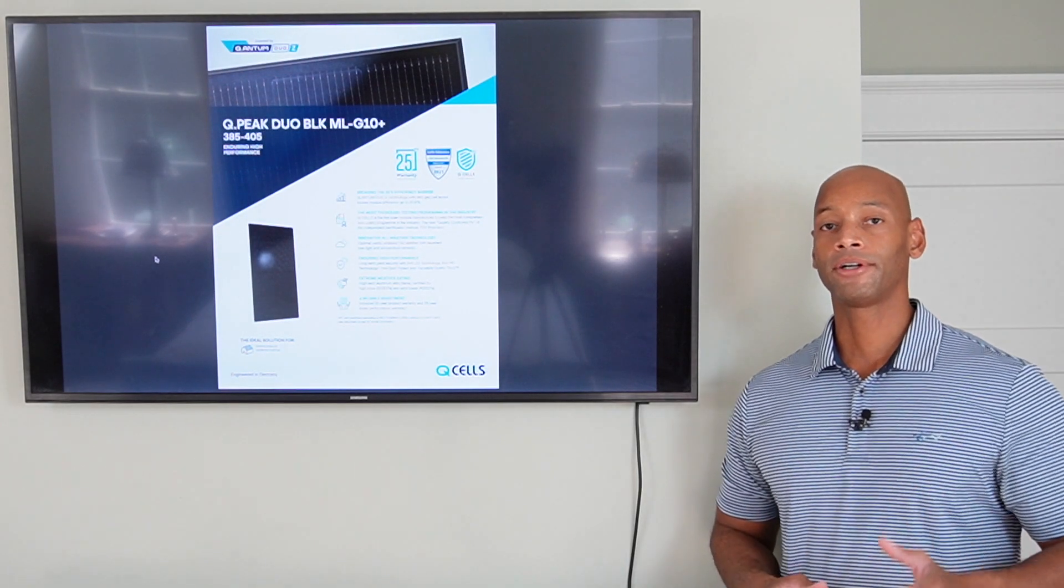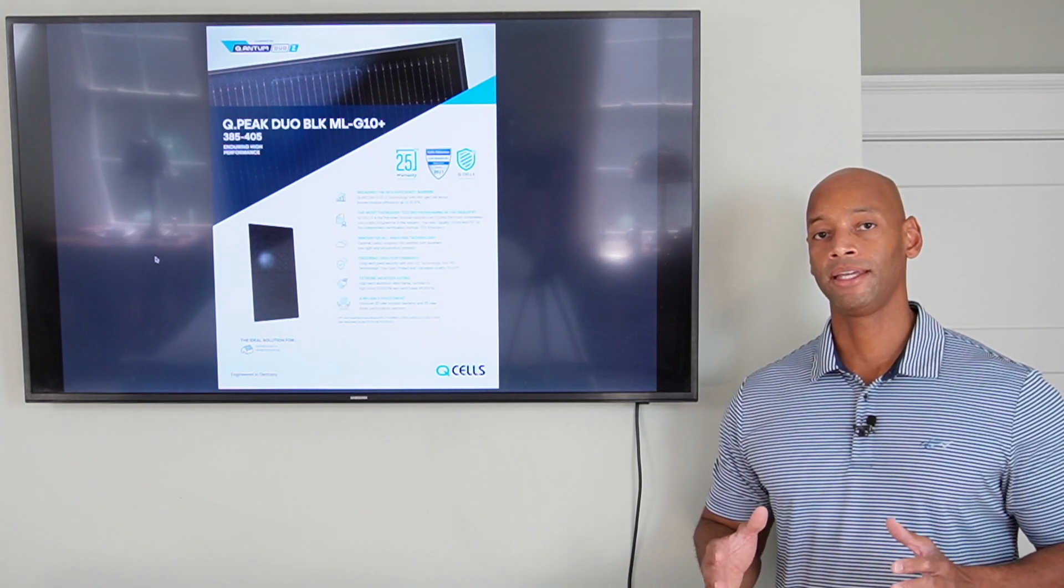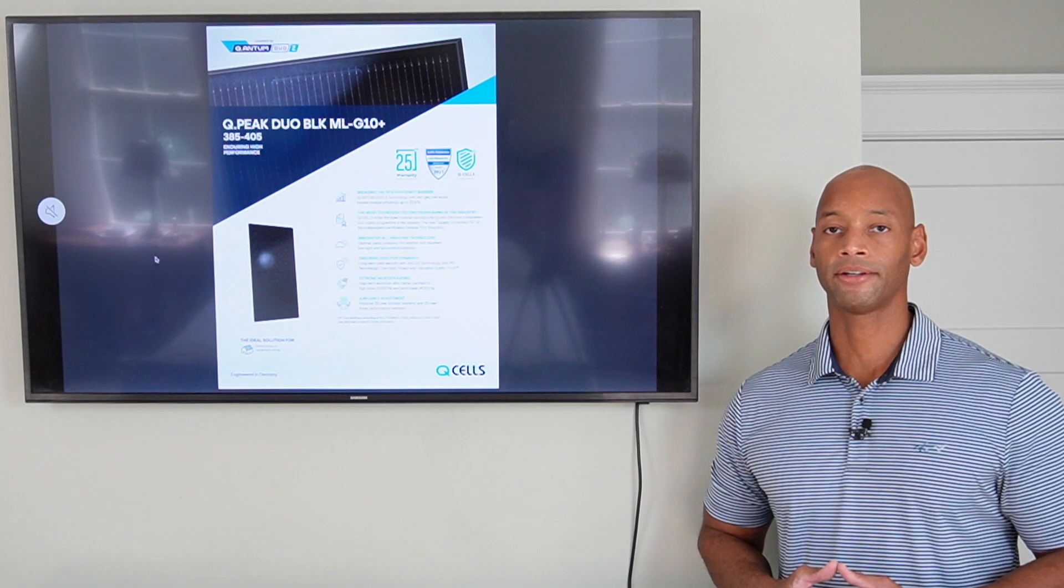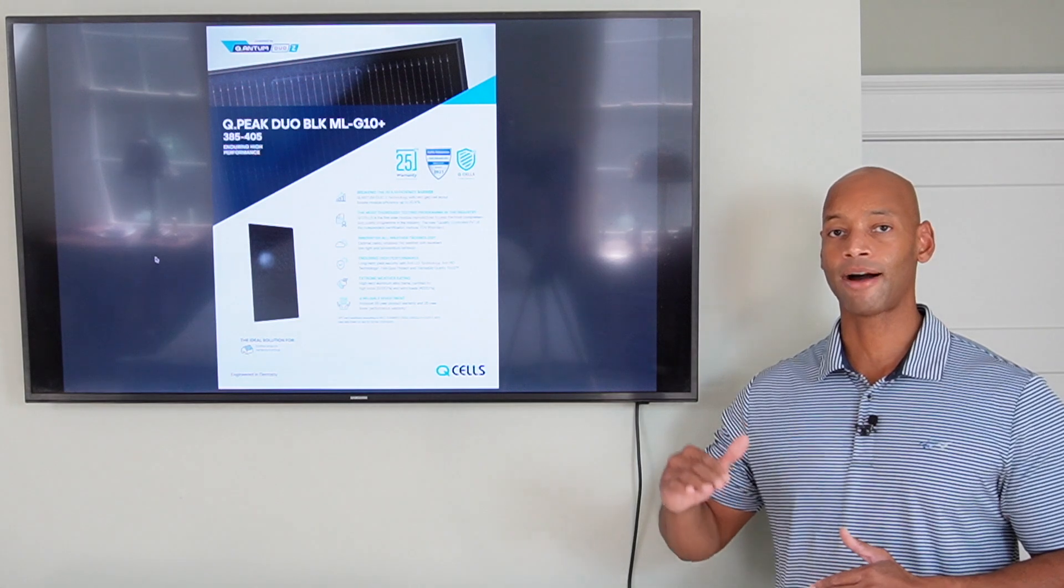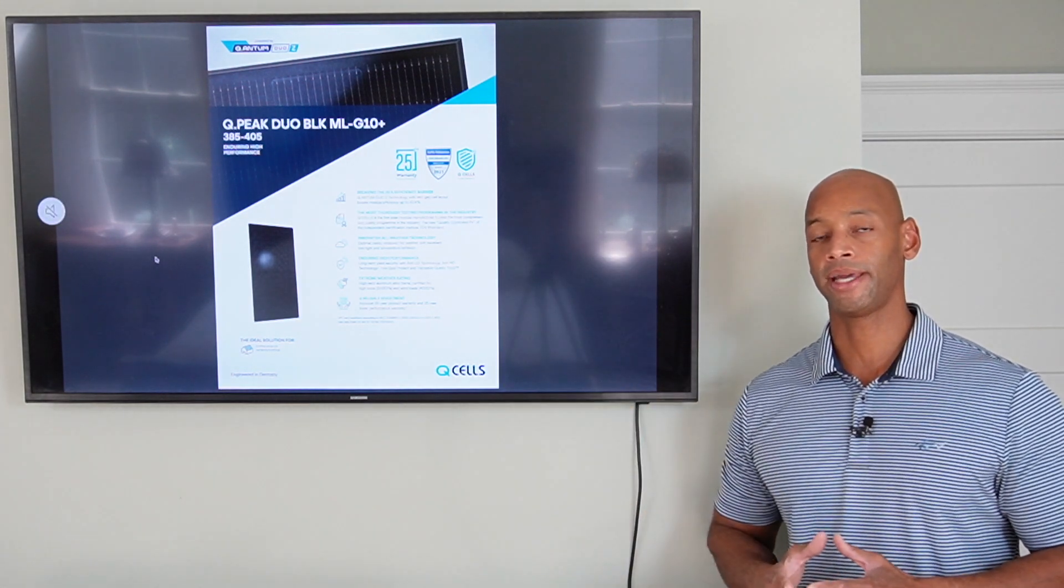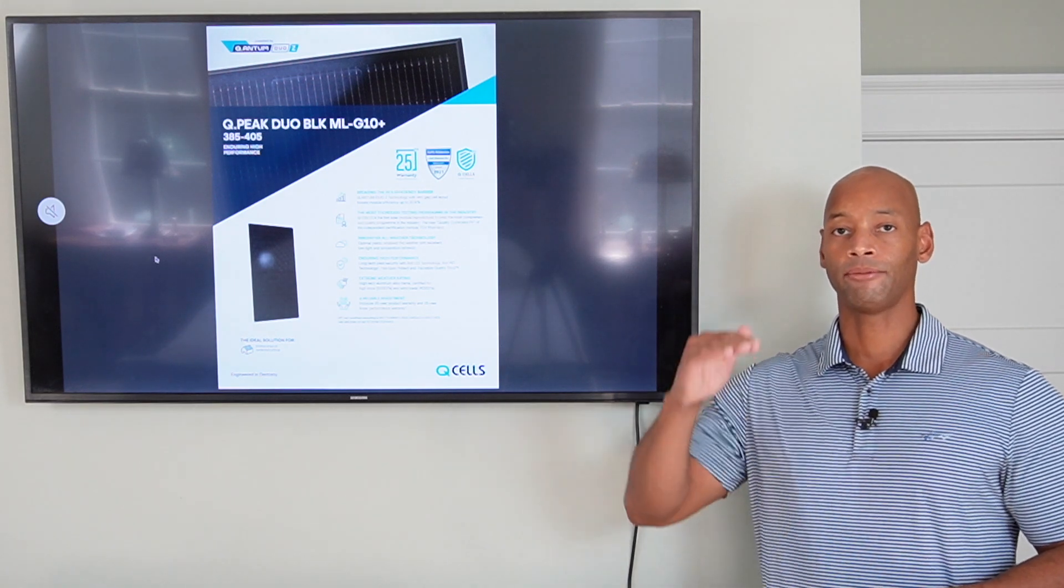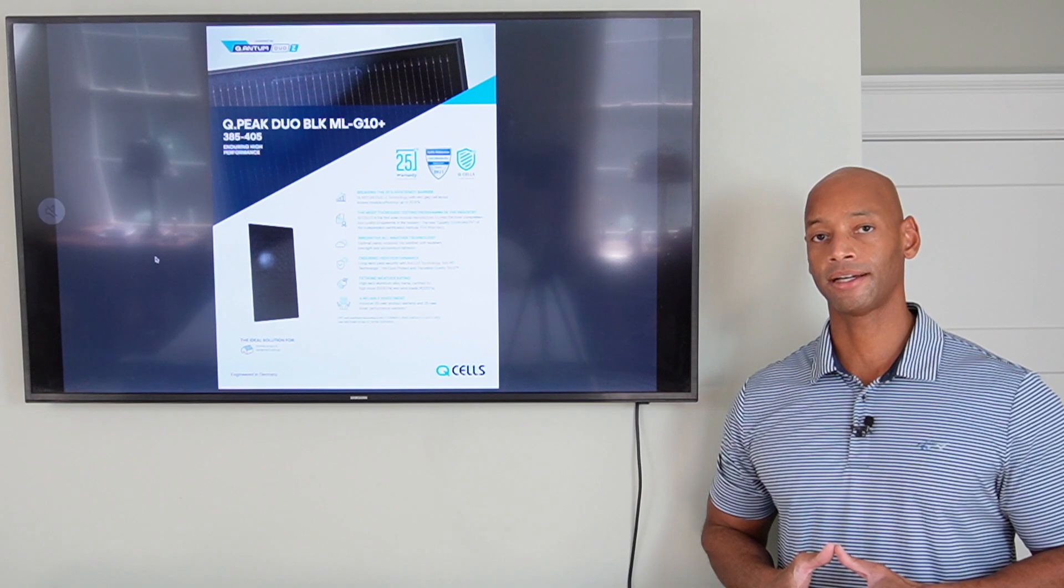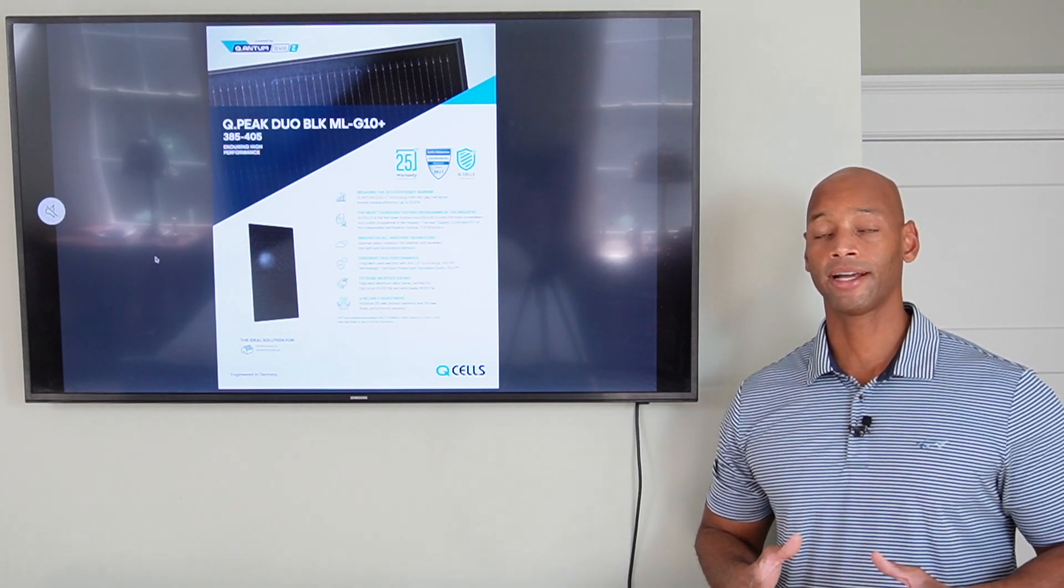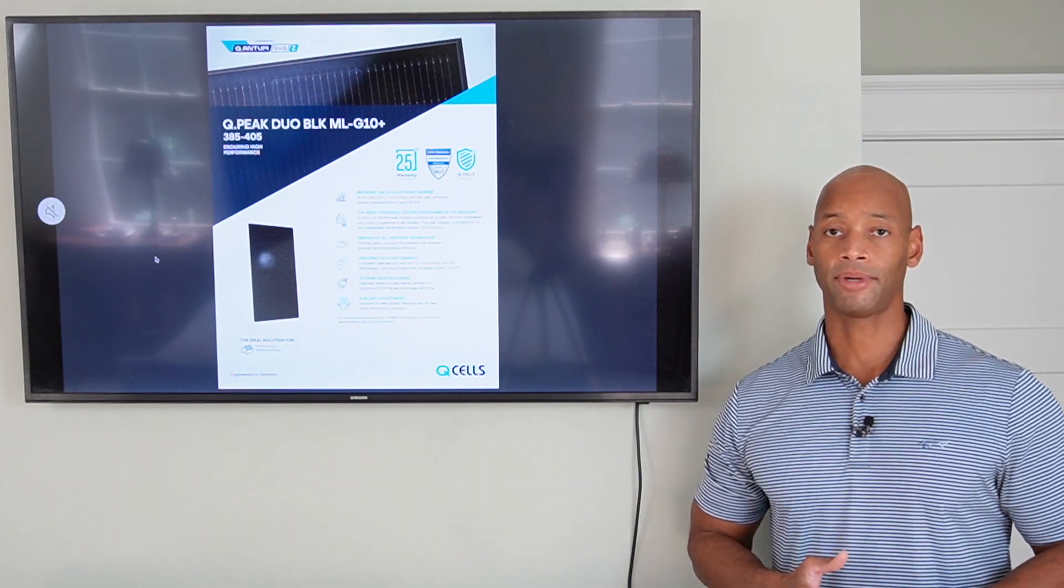You may recall from my previous video on the top solar panels, that the 66-cell form factor has come more into fashion this year. When we talk about 66 cells, we talk about how many individual solar cells make up the module. So, a 66-cell module is generally 11 modules high by 6 across for a total of 66 cells. That form factor is about 6 inches taller than the traditional 60-cell module.